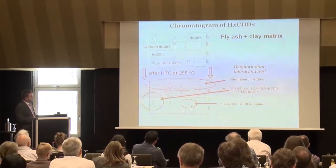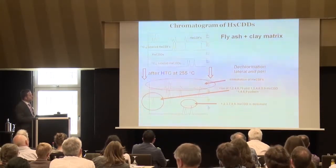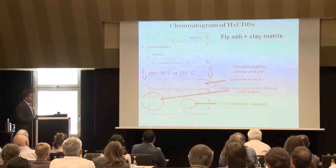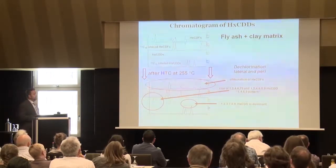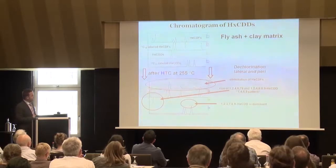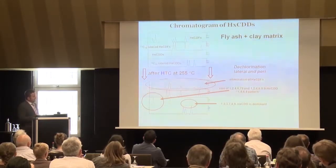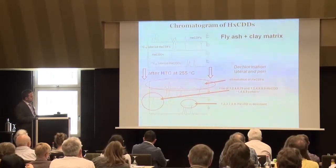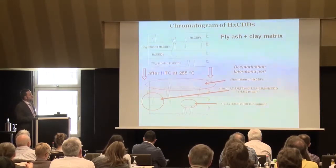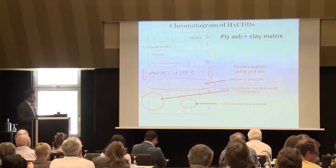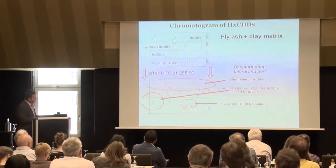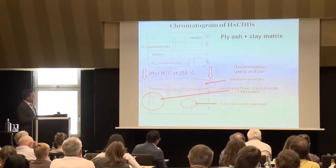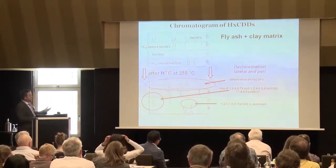Comparing the native chromatogram with the labeled standard, regarding the dioxins we see a rise of the so-called 1,4,6,9-pattern — very typical for ball clays. By lateral dechlorination, we obtain these congeners, and the predominant congeners after hydrothermal carbonization are the 1,4,6,9-substituted ones, just as in ball clay. We also see, within the toxic hexadioxins, the rise of 1,2,3,7,8,9-hexadioxin becoming dominant.